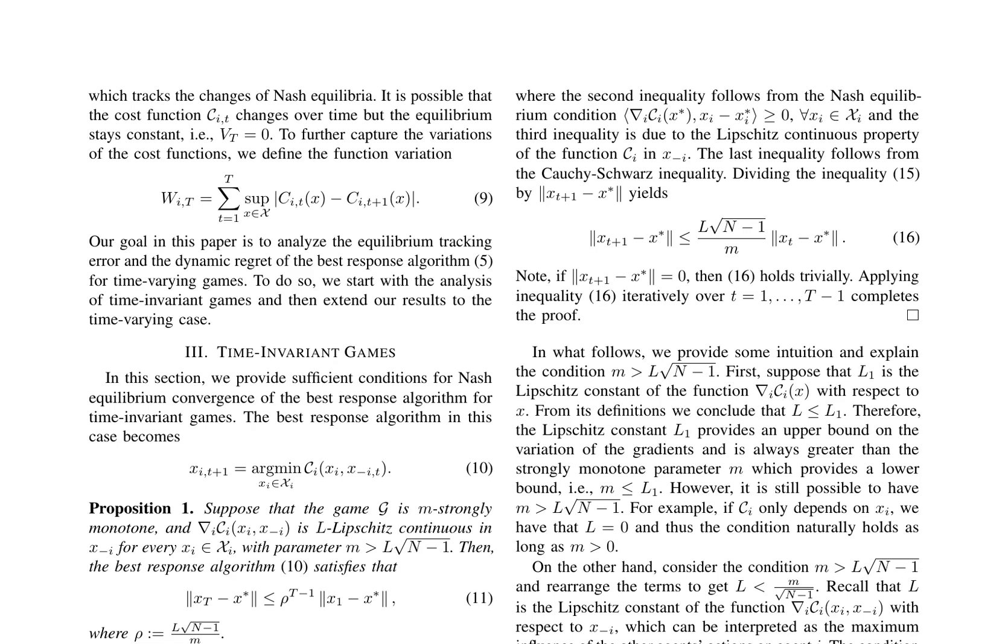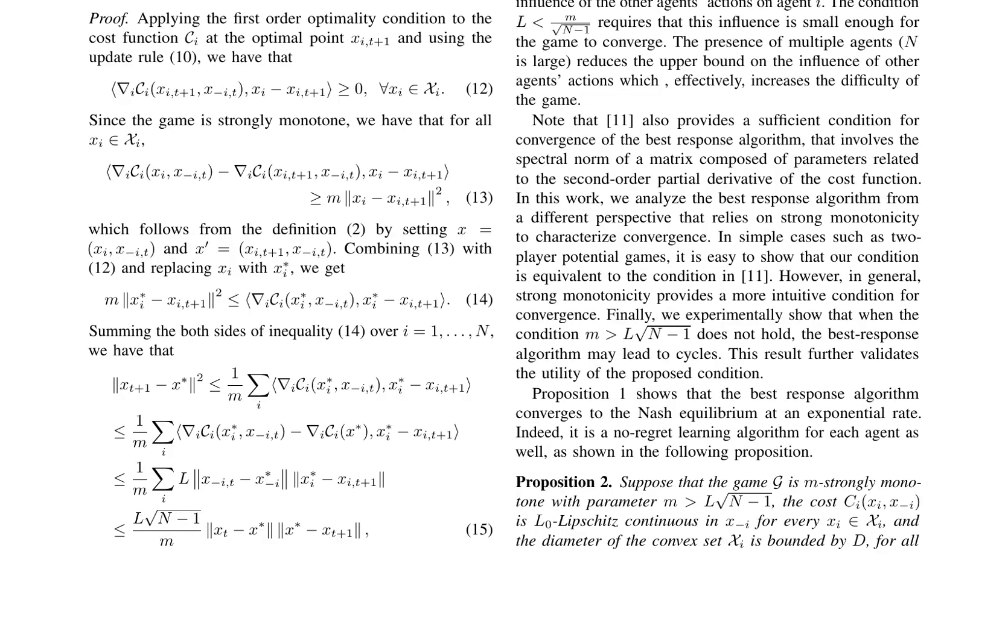Proposition 1 demonstrates that under strong monotonicity and L-Lipschitz continuity, the algorithm converges at an exponential rate, with the condition M greater than L√(N-1) being crucial for manageable influence from other agents' actions. Experimental results validate this condition, highlighting that when it does not hold, the algorithm may lead to cycles. This work offers a novel perspective on the convergence of the best-response algorithm, emphasizing the importance of strong monotonicity.